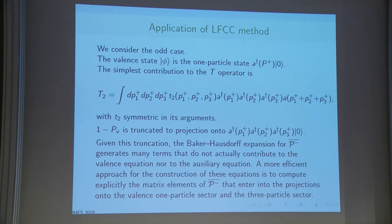The auxiliary equation has contributions: one from the 1-to-3 term — this is the wave function renormalization term — and others from additional terms in the Hamiltonian from the Baker-Hausdorff expression. We can see non-linearity: T₂-tilde squared, second order in T₂. This is the so-called loop correction, coming exactly from the infinite number of Fock states.